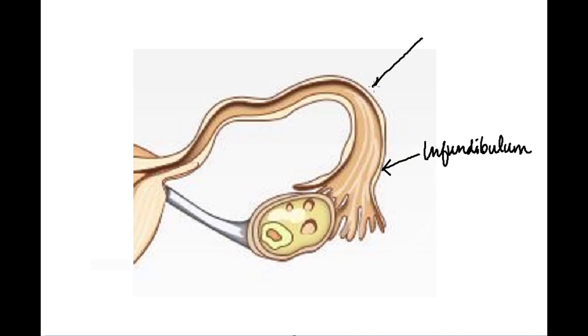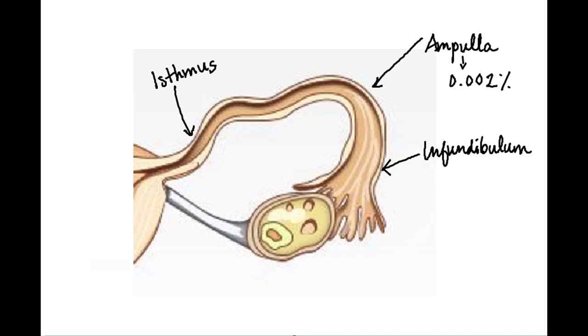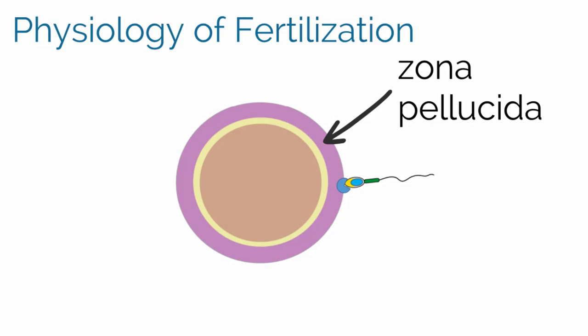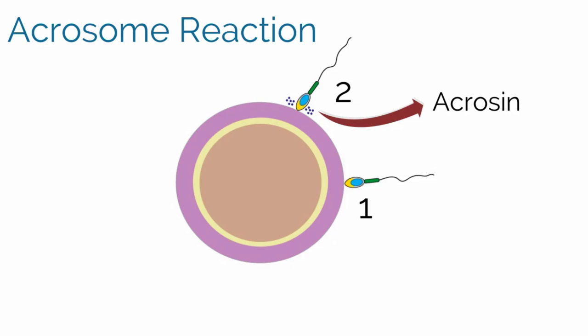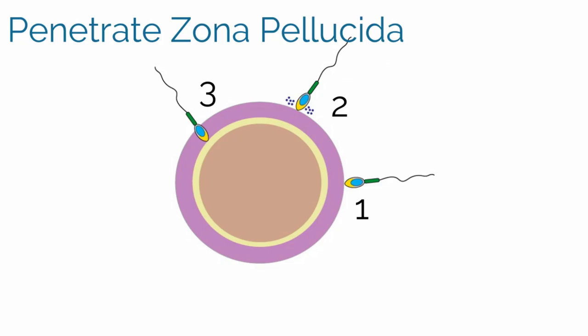This is a fallopian tube, with the infundibulum, ampulla, and isthmus labeled. Only a small fraction — 0.002% of sperm — reach the ampulla of the tube, where fertilization typically occurs. The zona pellucida is the glycoprotein layer surrounding the oocyte. The sperm head binds to the zona pellucida within 24 to 48 hours of ovulation. The sperm binds to ZP3 receptors on the glycoprotein layer, which triggers the acrosome reaction, in which hydrolytic enzymes such as acrosin are released at the head of the sperm.